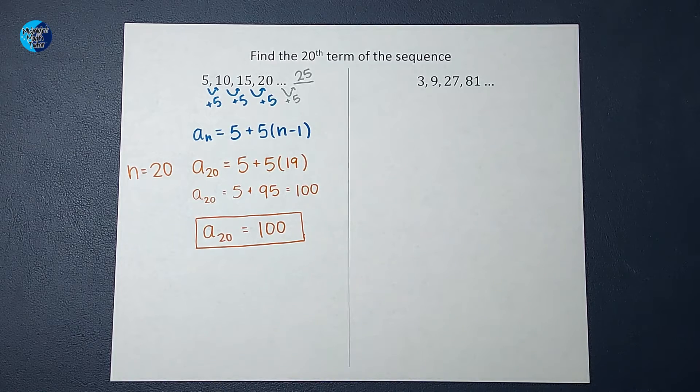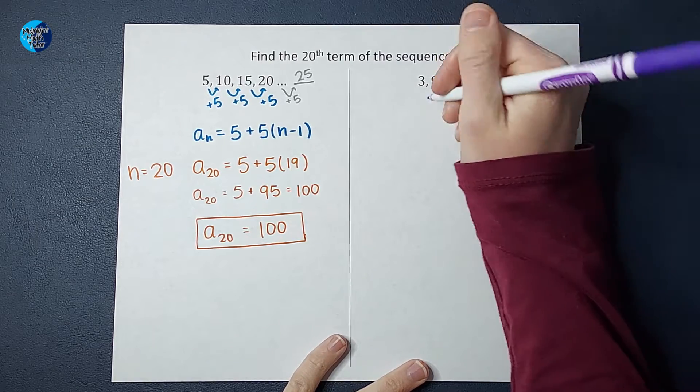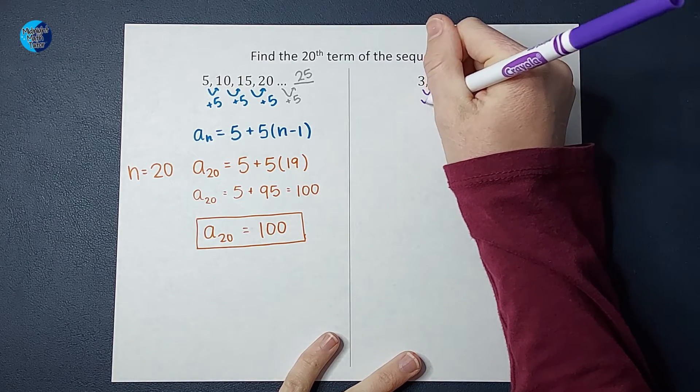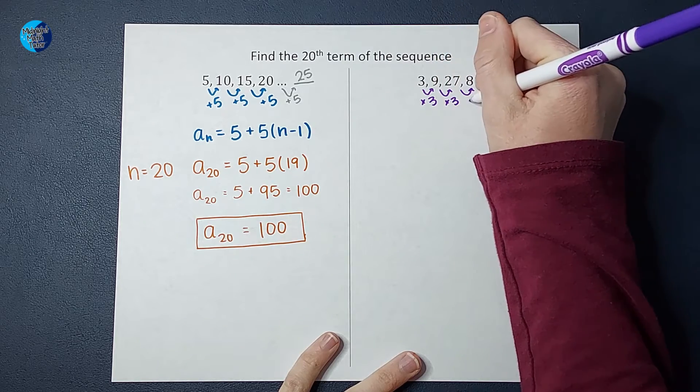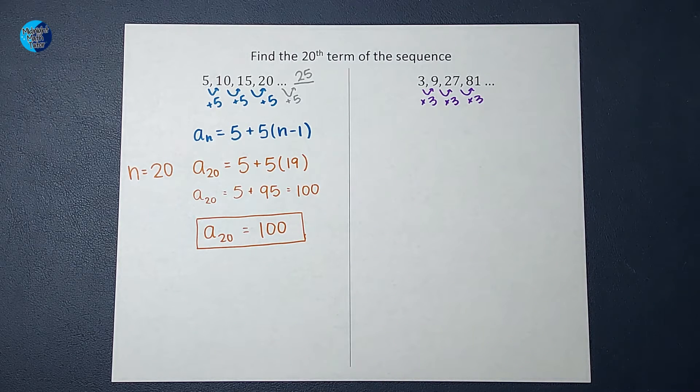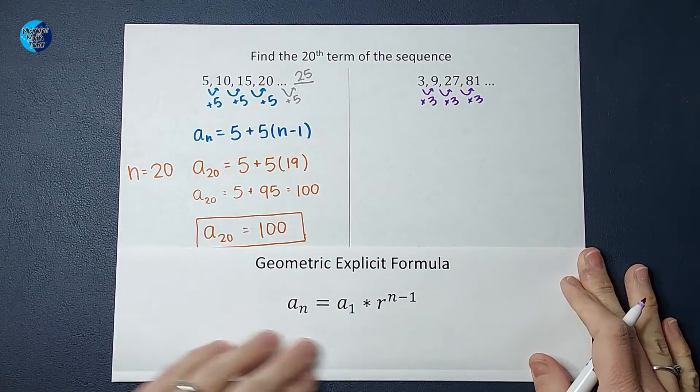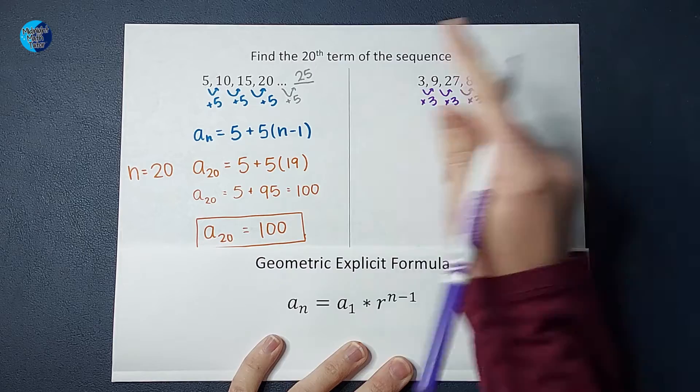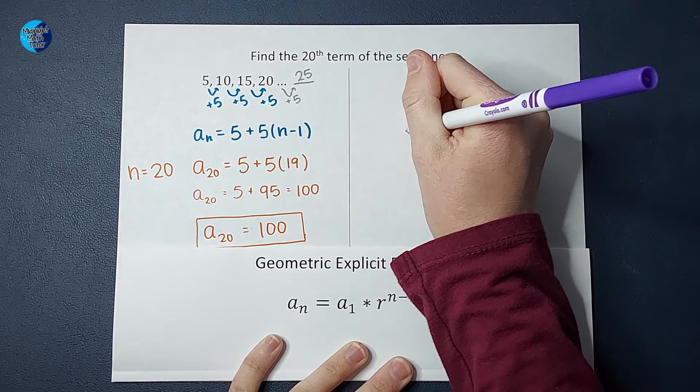Okay. Let's look at this one. This one's a little more complex, but that's okay. So what are we doing each time here? We are multiplying by three each time. So because I'm multiplying, this tells me that this is a geometric sequence. So I need my geometric explicit formula, which I happen to have right here.